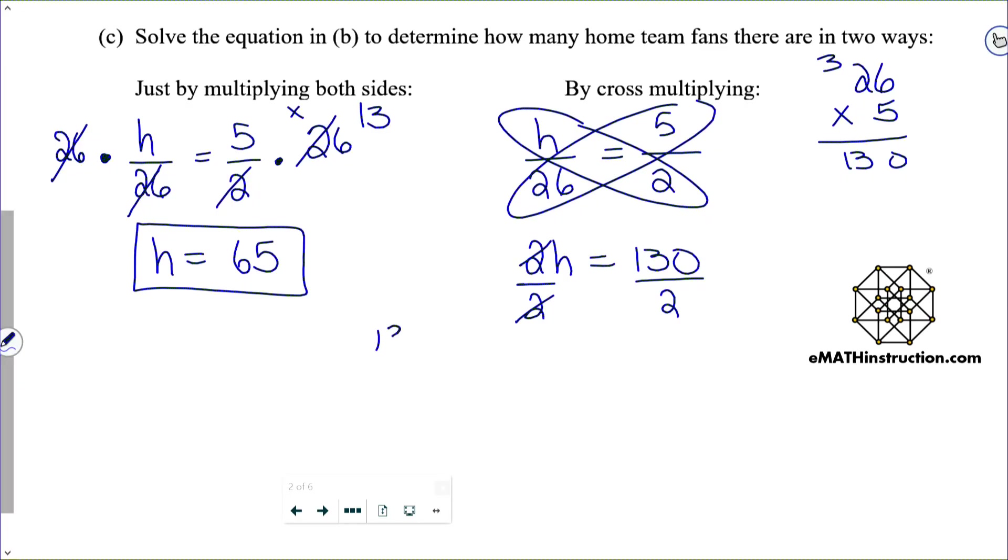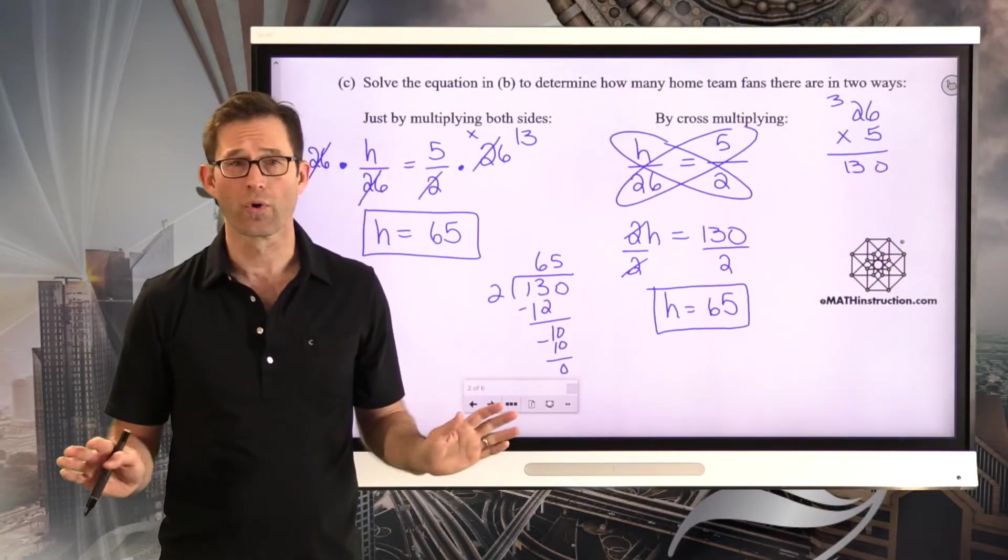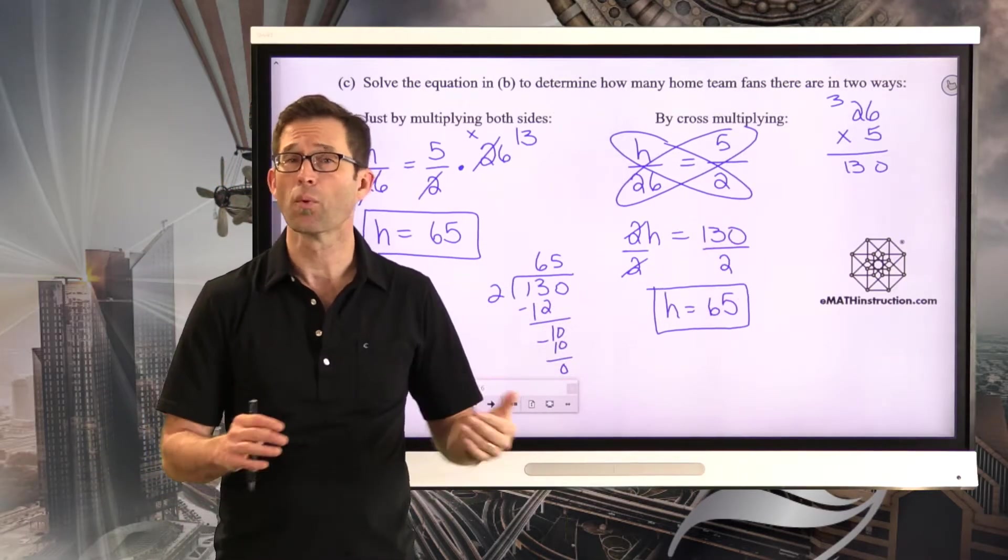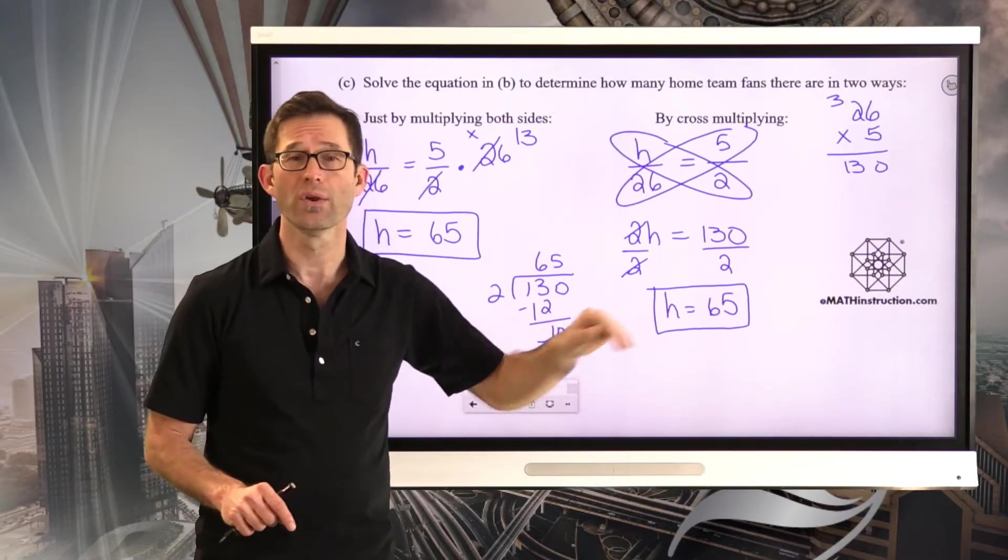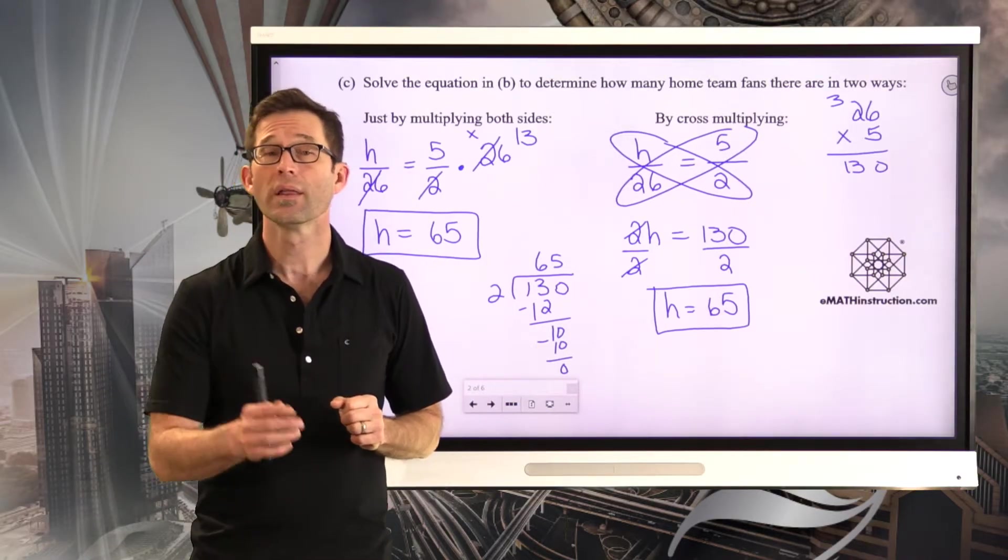Maybe you got to bring this over here and do 130 divided by 2. Either way, H is 65. Now, both of these methods work great. The one that is more general is the cross multiplication, because it will always take a situation where you have a fraction equal to a fraction and produce an equation where all you have to do to solve it is divide.